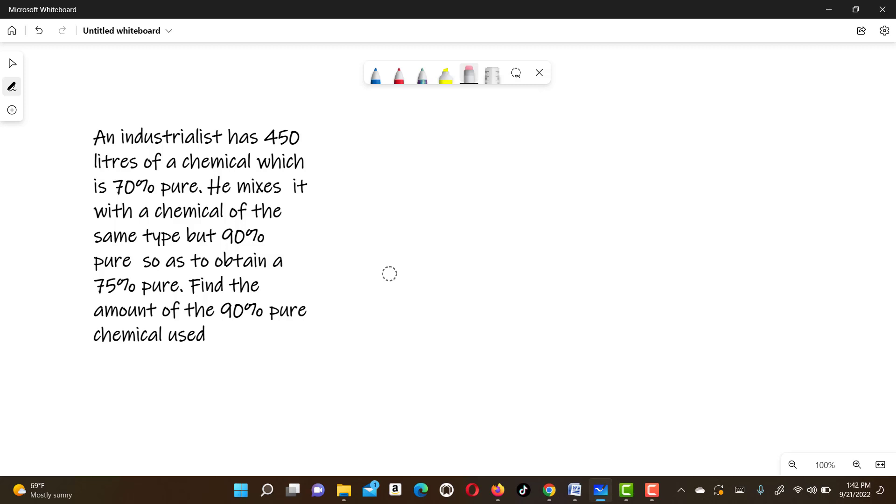An industrialist has 450 liters of a chemical which is 70% pure. He mixes it with a chemical of the same type but 90% pure so as to obtain a 75% pure mixture. Find the amount of the 90% pure chemical used.